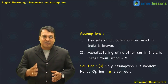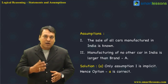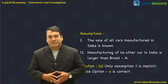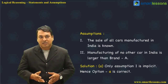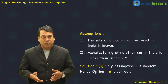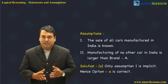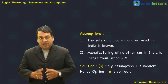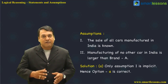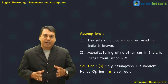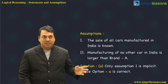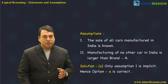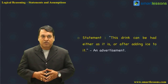Assumption one — the sale of all cars in India is known — will be known because of surveys and market research firms, but that is not the logical assumption of the statement. The logical assumption is that no other car in India is manufactured more than Brand A. So only option two is implicit — option two is the correct answer.